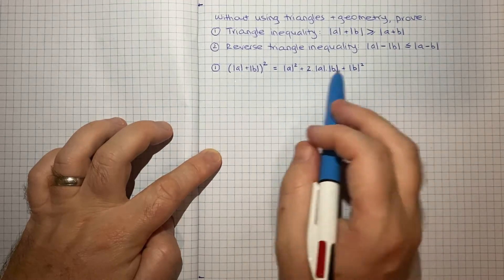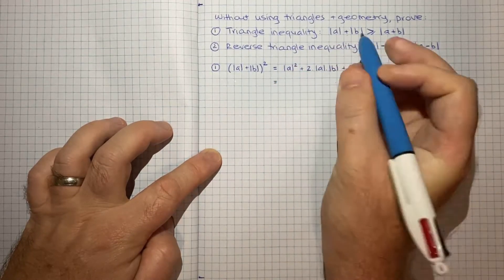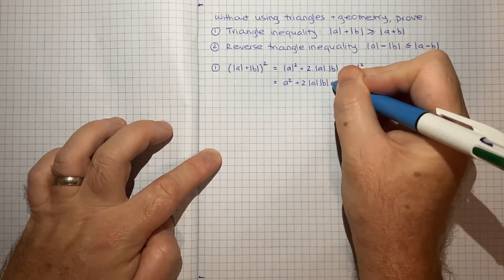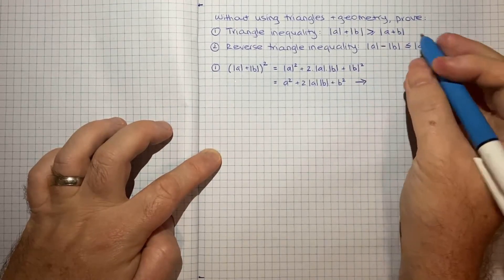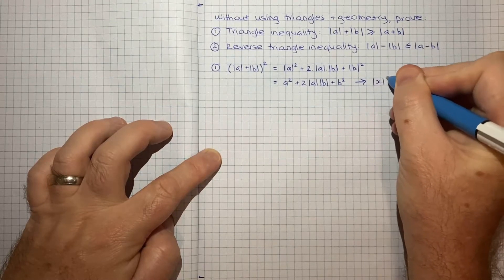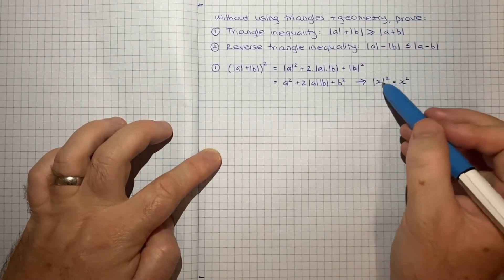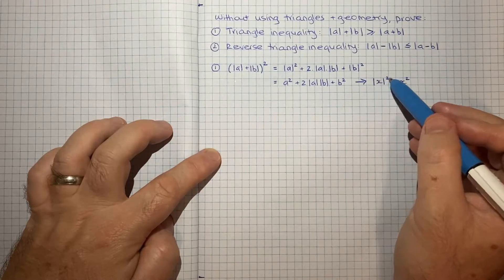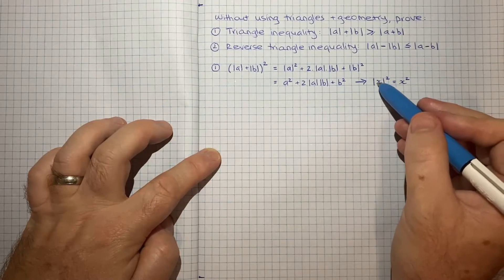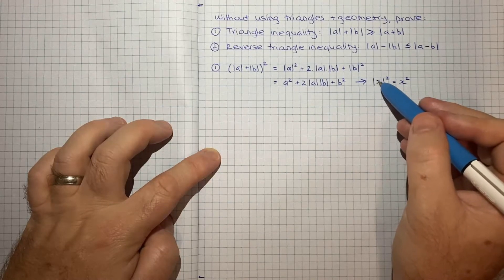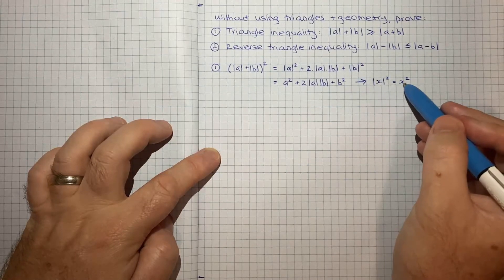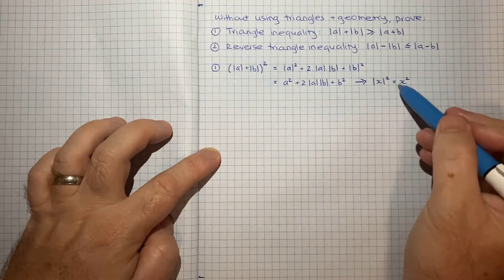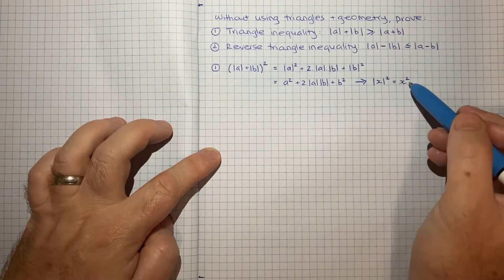Now I can write this as A² plus 2 times |A| times |B| plus B². The reason is that in general, the absolute value of some number X, squared, is the same as X squared. For example, |2|² = 2² = 4, and |−2|² = 2² = 4 = (−2)² as well. So the absolute value squared can just be written as that number squared.